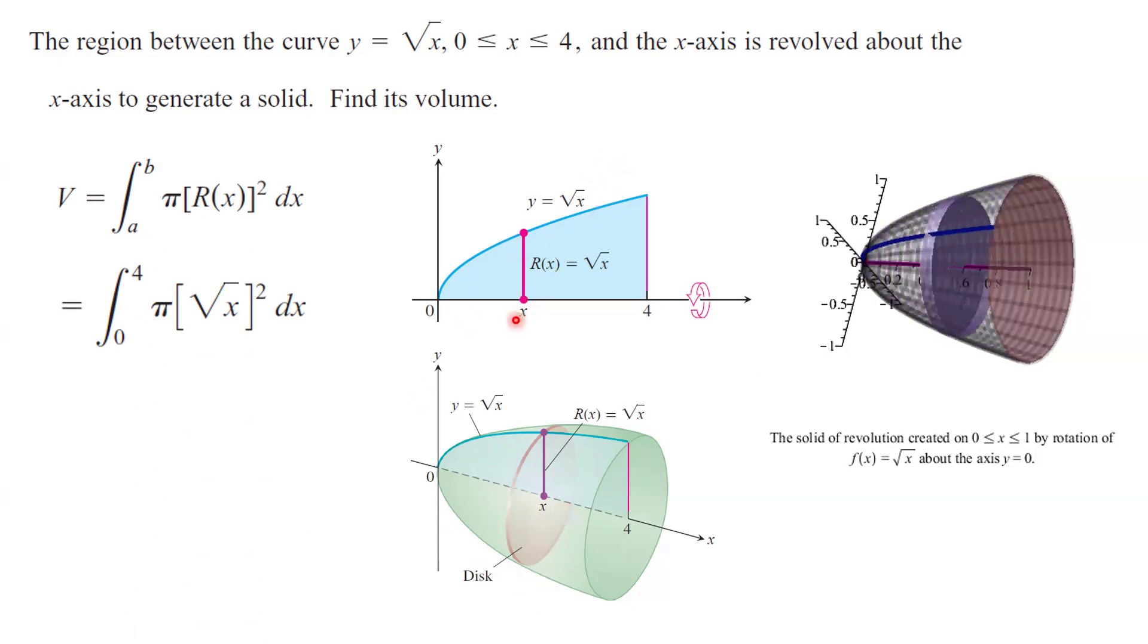This is basically the radius of your circle, solid circle or the disk here. You raise it to the second power, and then you take the integral with respect to x.